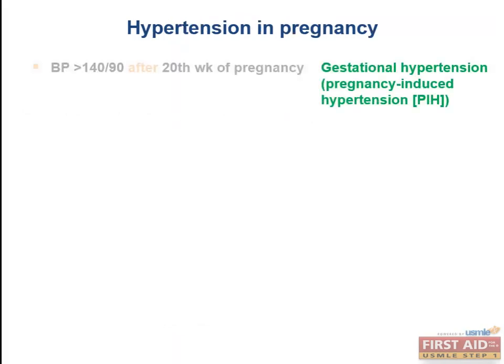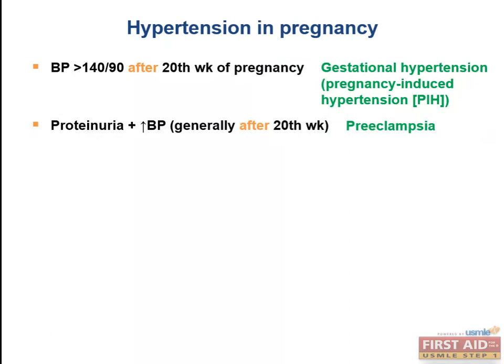Hypertension in pregnancy: gestational hypertension, which is pregnancy-induced hypertension, is that which occurs after the 20th week of pregnancy. If there's hypertension present before the 20th week, it's not gestational hypertension. Preeclampsia is defined as the presence of protein in the urine with increased blood pressure, generally after the 20th week of pregnancy. Proteinuria plus increased blood pressure before the 20th week is characteristic of hydatidiform mole.